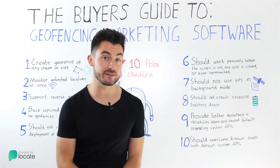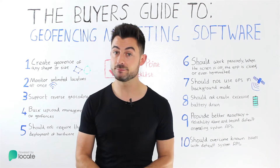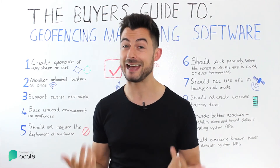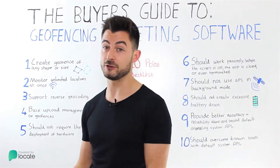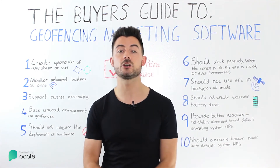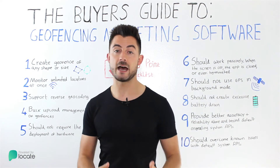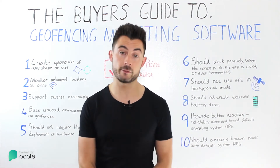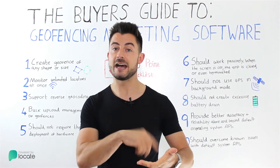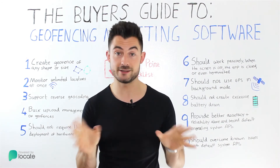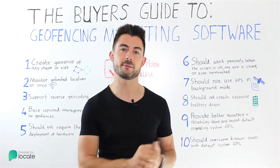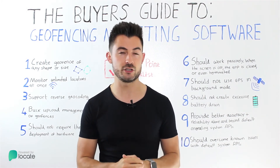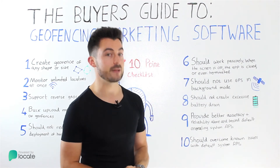Number six: it should work passively, meaning you're not reliant on your user having the app open. Some competitors require you to have the app open as the user enters the geofence — pretty unlikely your customer will have the app open at the moment they show up. It's about passively engaging with customers as they appear in the real world. The app can be in the background, the screen can be off, or the app may even be terminated — many iOS users kill apps thinking it saves battery, which it doesn't. Your geofencing SDK needs to be able to restart in the background whenever a user crosses that geofence.